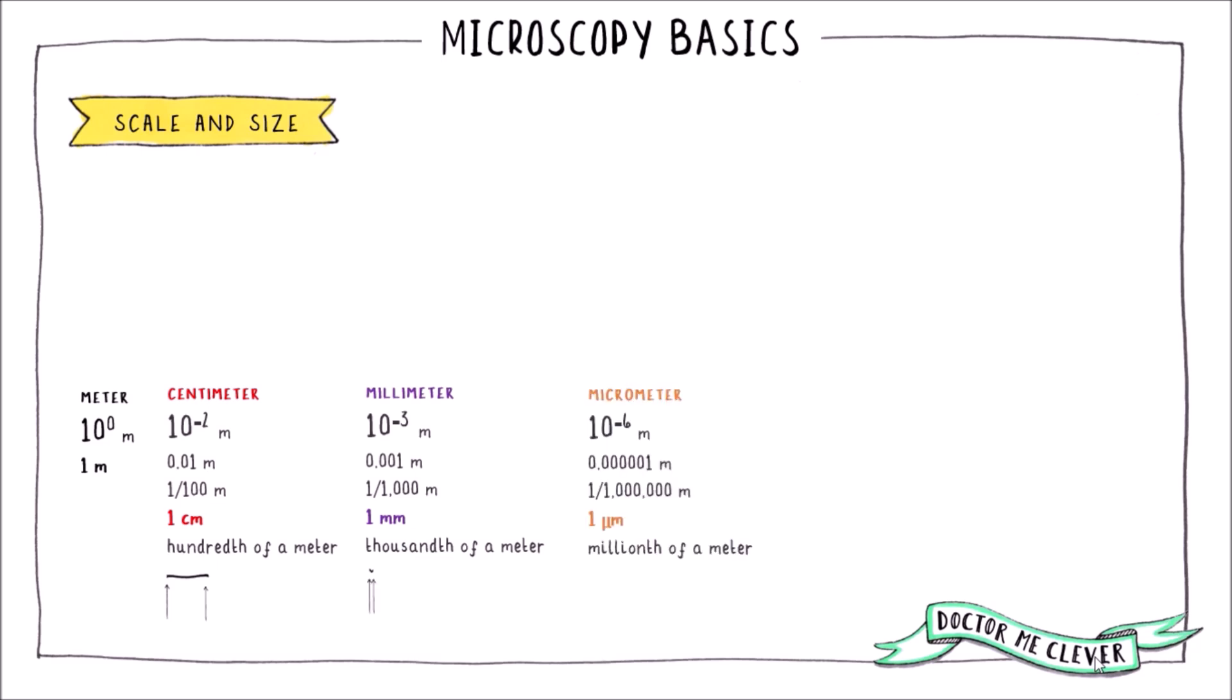However when we try view a micrometre which is one millionth of a metre, the human eye cannot distinguish between or resolve its two end points and therefore we cannot see it without the aid of a microscope. Likewise for anything smaller like a nanometre which is one billionth of a metre or a picometre which is one trillionth of a metre we would need an awful lot of help to see something that small.